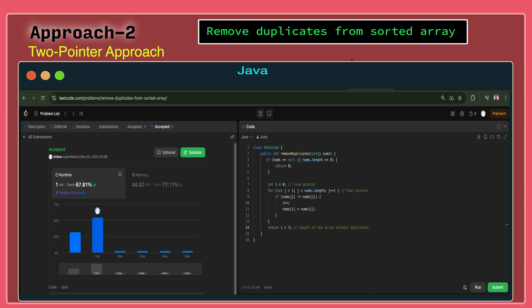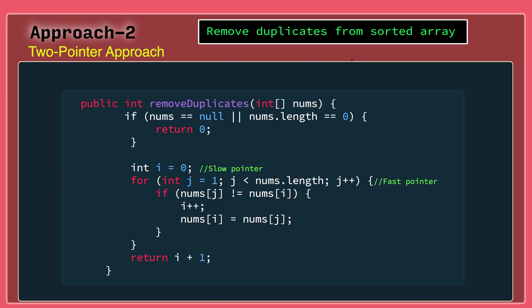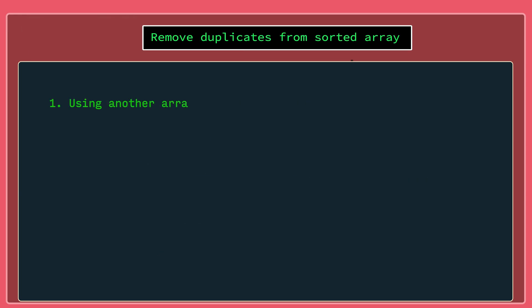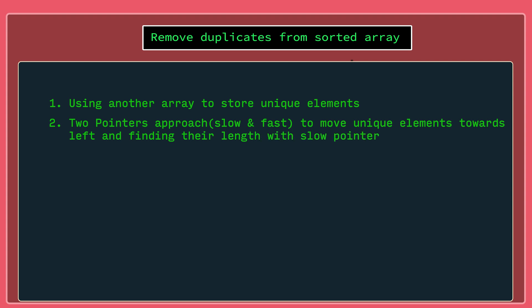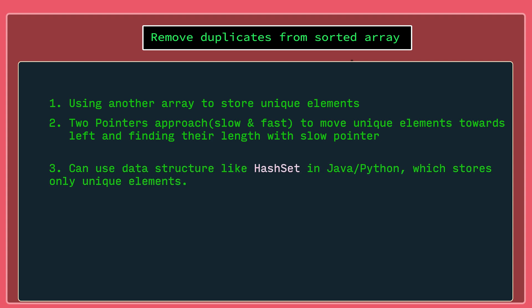That's all about the solutions for 'Remove Duplicates from Sorted Array'. To summarize, we covered two solutions: the first uses an auxiliary array to store unique elements, and the second uses two pointers — slow and fast — to move unique elements towards the left. There's also a third approach you can try using data structures like HashSet in Java or Python, which store only unique elements. If you have any queries, please comment in the comment section. Thank you for watching and see you in the next one!